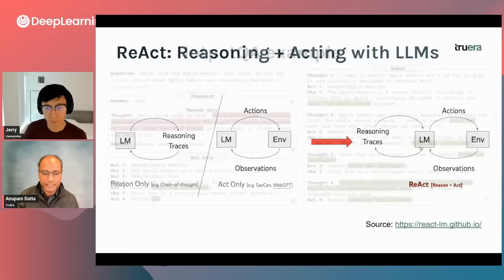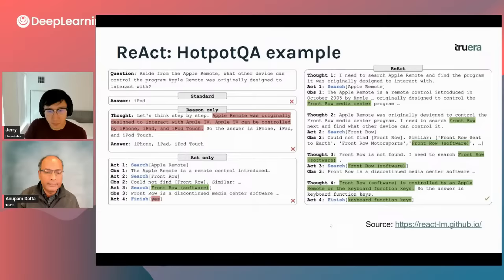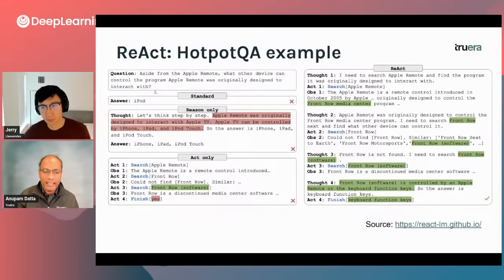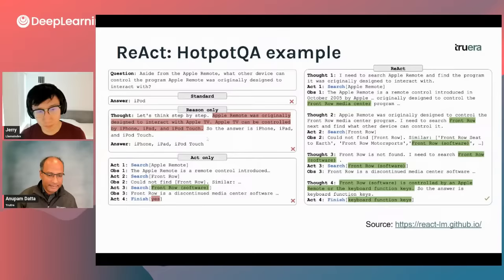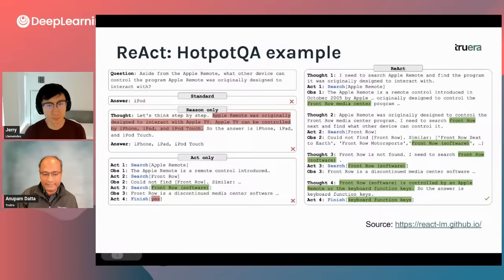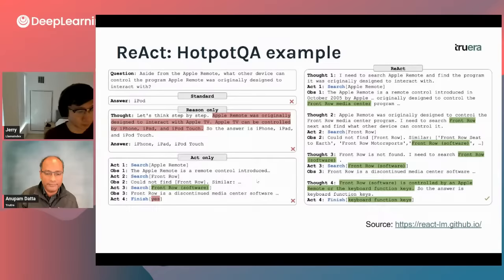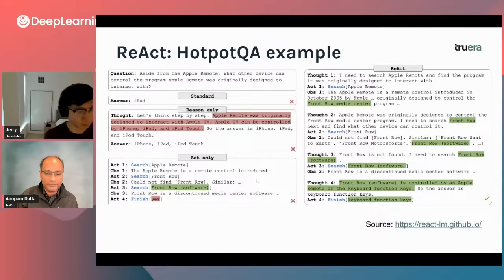Here's a quick example from the ReAct paper. The question asked was: aside from the Apple remote, what other device can control the program the Apple remote was originally designed to interact with? If you just ask a standard LLM, the answer was iPod — which was incorrect. If you make the LLM reason step-by-step, even then it comes back with the wrong answer. If it only acts, it starts doing an external search but the search doesn't produce a meaningful result. So a separation between reasoning and acting done one at a time, without interleaving, does not produce the right result.